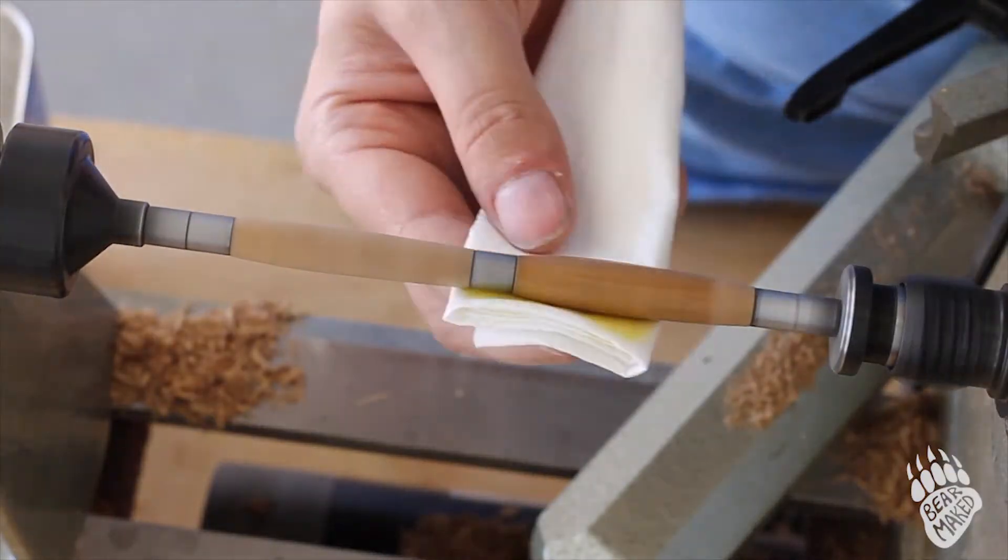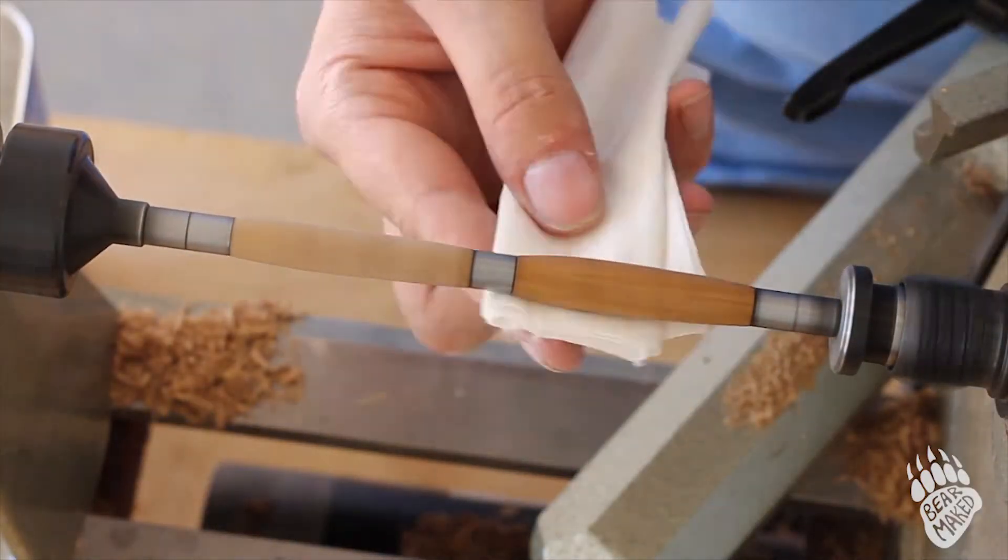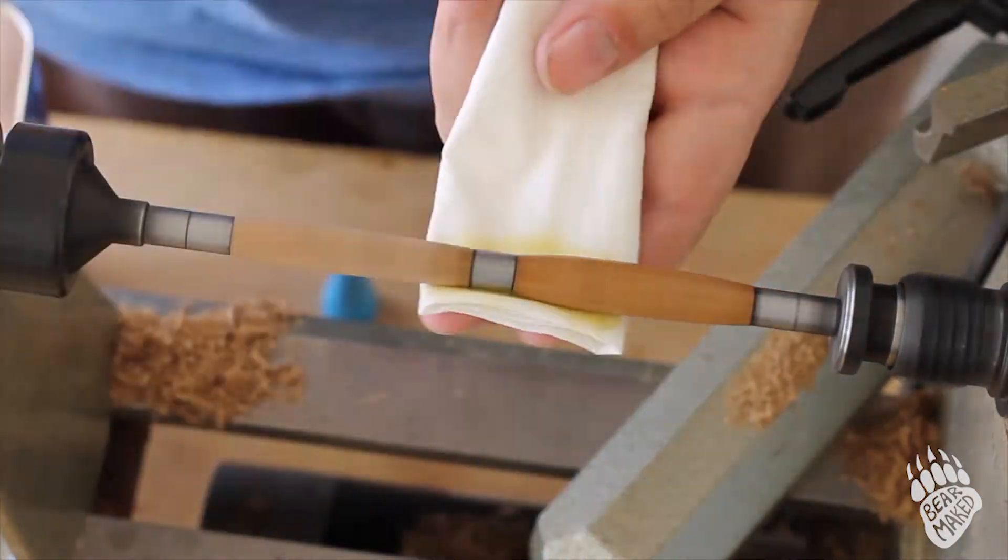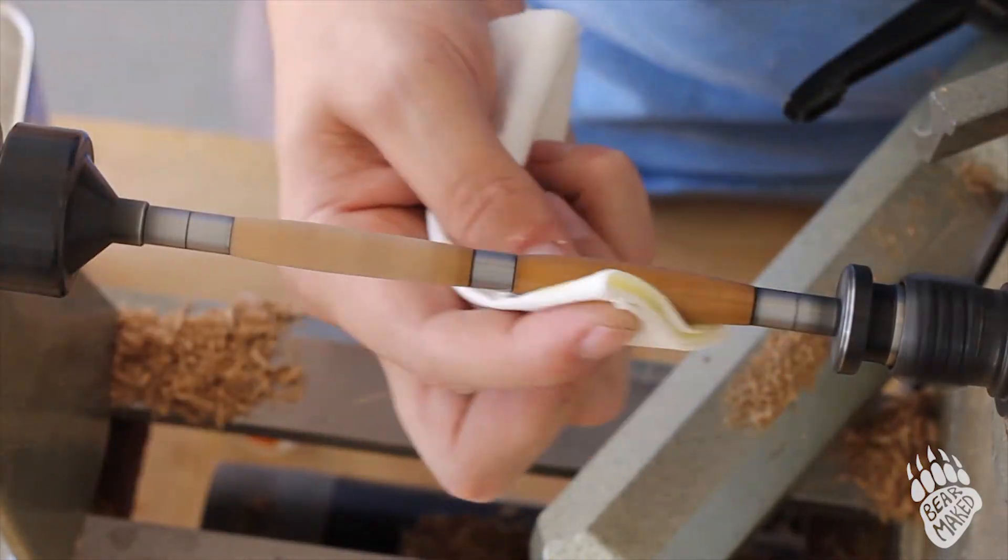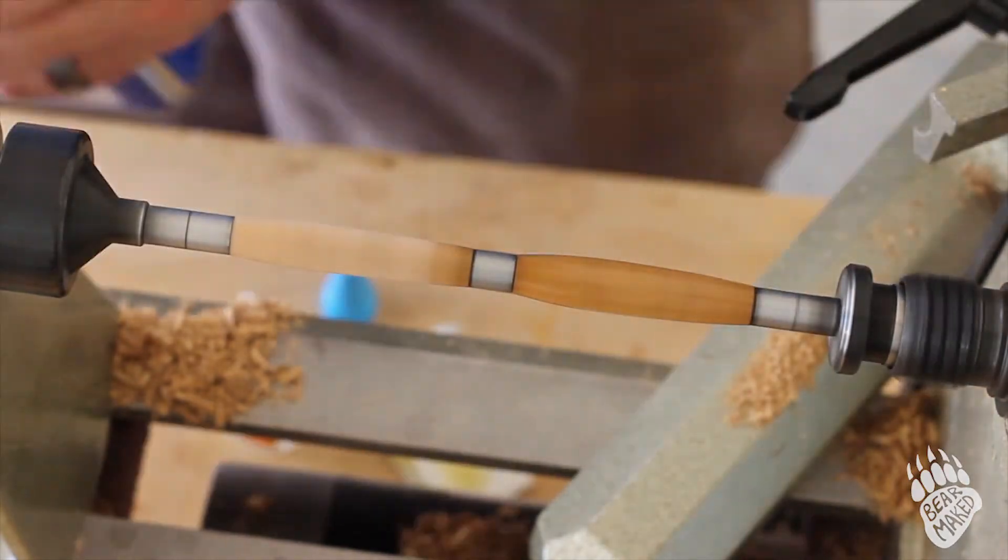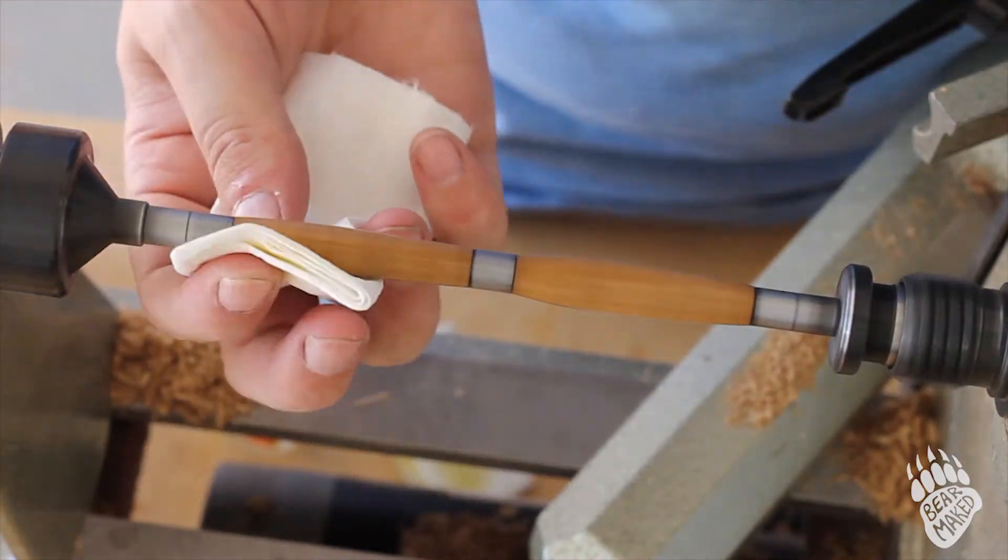And then with the sanding done, it was time to start applying the finish, which I used boiled linseed oil and then super glue. You just alternate, put on a coat of boiled linseed oil, and then put super glue on.